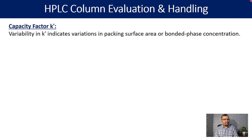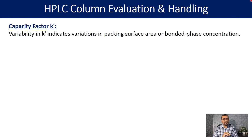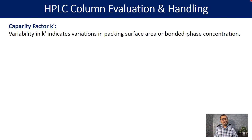The capacity factor — variability in k' — indicates variations in packing surface area or bonded phase concentration. Sometimes if your pH is very extreme, your silica may get dissolved, and because of that your bonded phase concentration can decrease. With less stationary phase available, there is less interaction, resulting in a reduction in k' or retention time. So variability in retention time or k' indicates that your packing surface area is getting reduced.